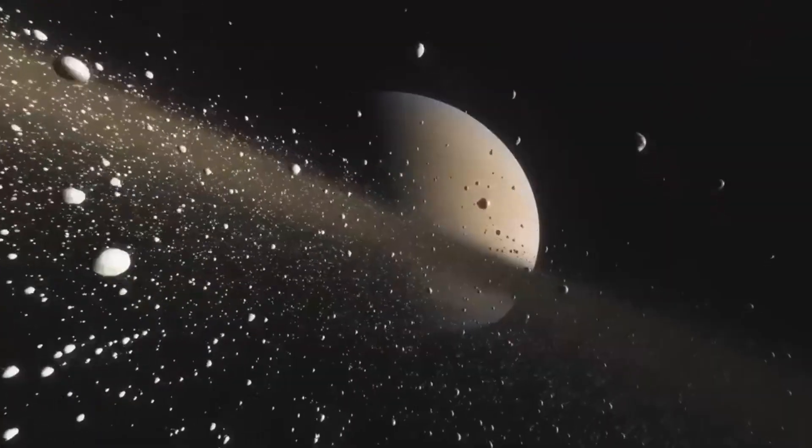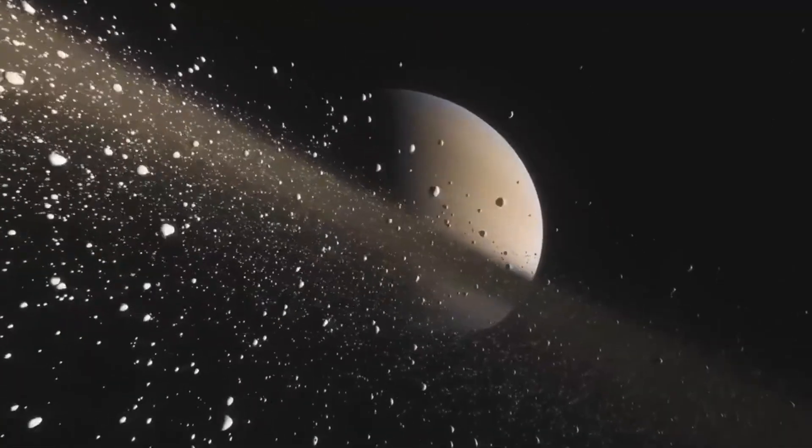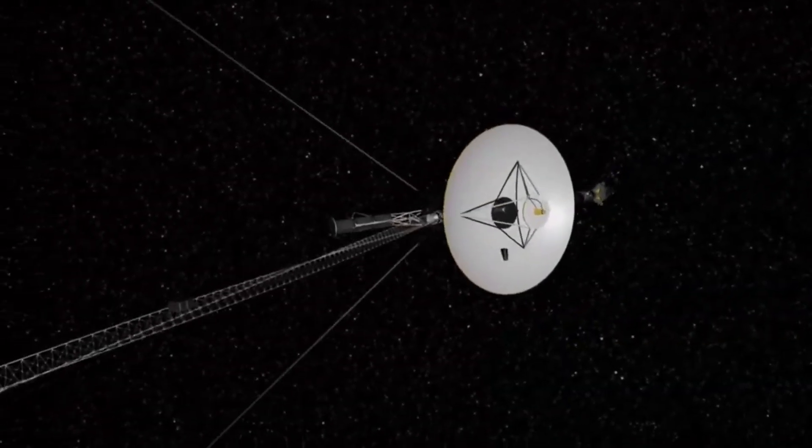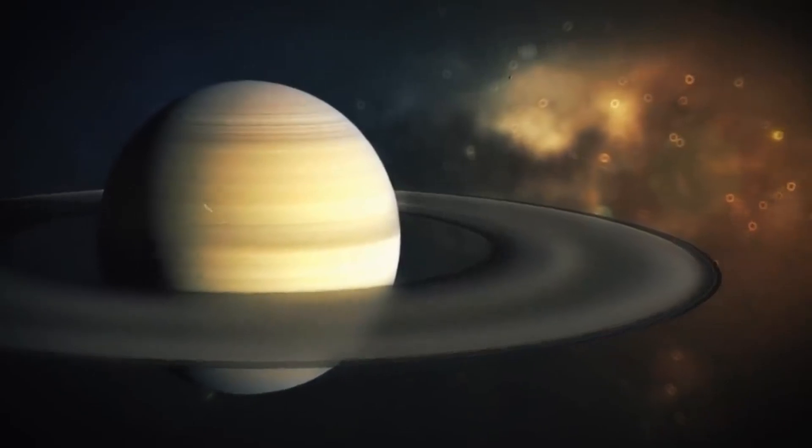as if being tugged along by an invisible cord that snapped at the last second, flinging the probe on its way. Flandro calculated that the repeated gravity assists, as they were called, would cut the flight time between Earth and Neptune from 30 years to 12.